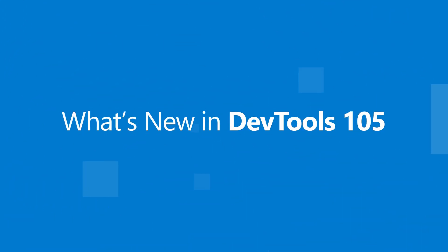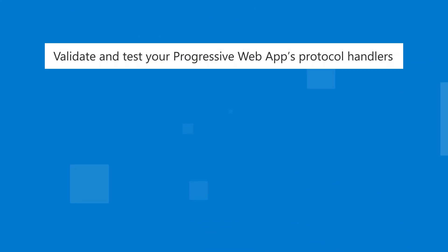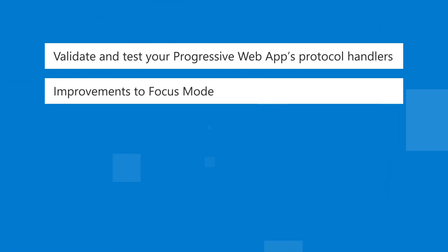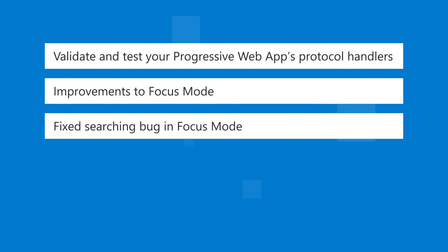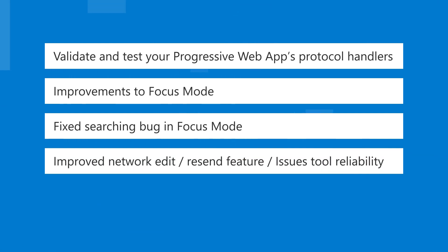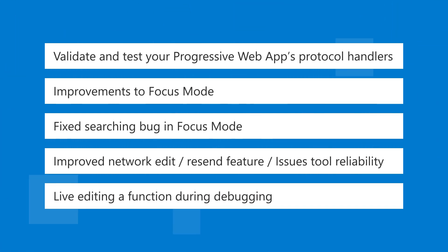Hi everyone, my name is Patrick and this is what's new for the Edge developer tools in version 105. In version 105, we made it possible to validate and test your progressive web app protocol handlers. In focus mode, we improved the docking and activity bar orientation controls and made it possible to move the quick view to a vertical orientation. We fixed a bug in focus mode that was preventing users from searching in the network and sources tools. We made the edit and resend feature in the network panel more reliable and we also made the issues panel more reliable. And finally, live editing of functions while debugging is now possible. So let's dive in!